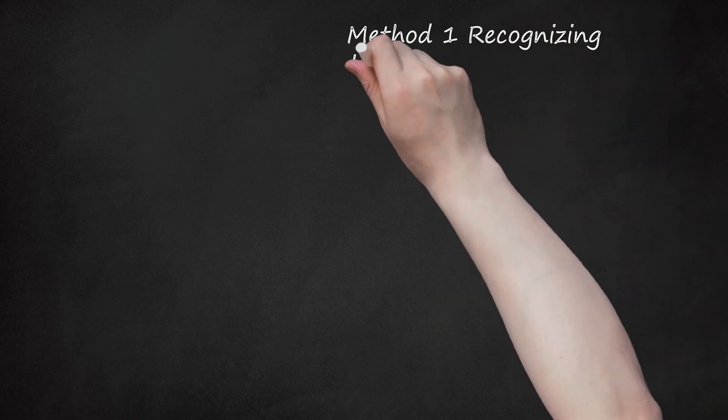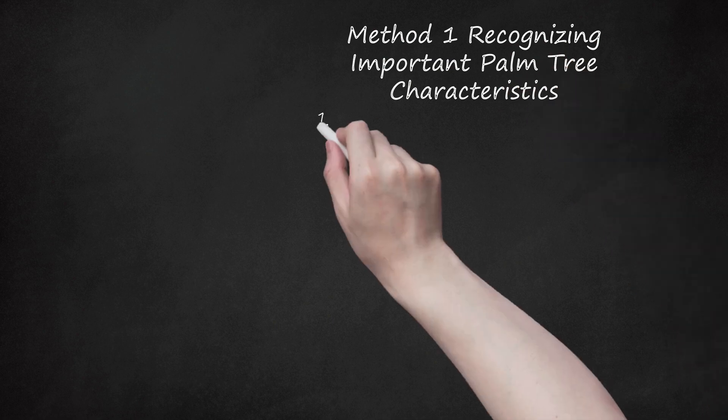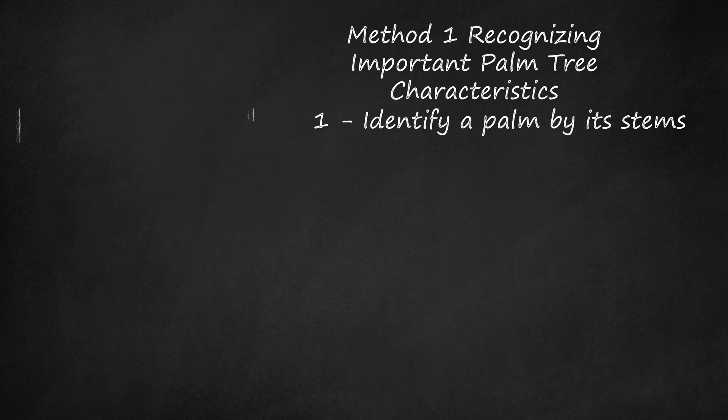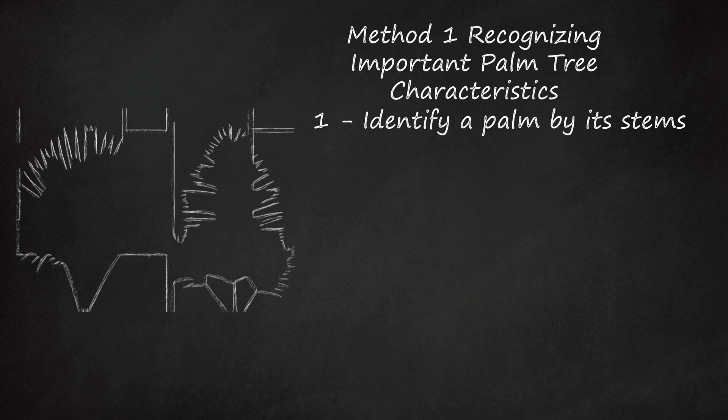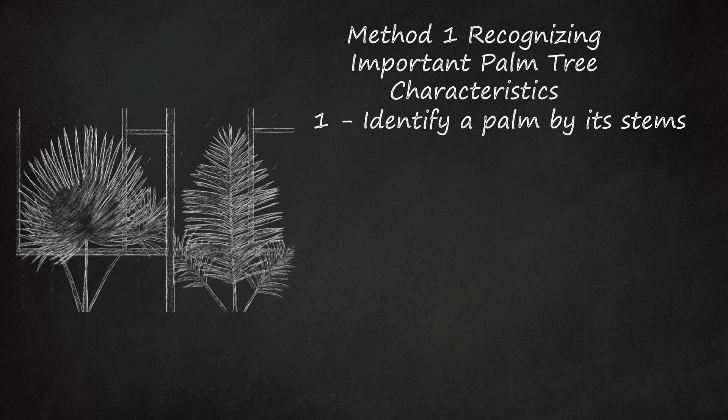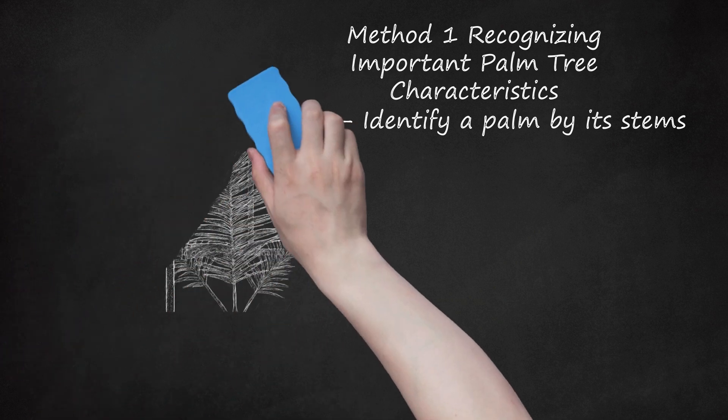Method 1: Recognizing Important Palm Tree Characteristics. First, identify a palm by its stems. One thing that distinguishes a palm tree from other tree varieties is its unbranched stem with leaf tufts either on the end or on each side of the stem known as fronds. These bushy, often large leaves on the stem are a most common identifier.